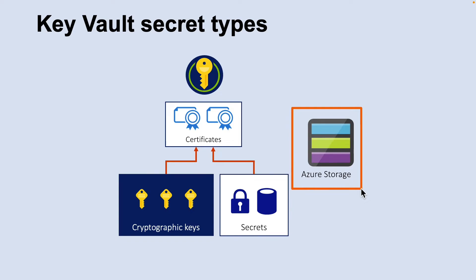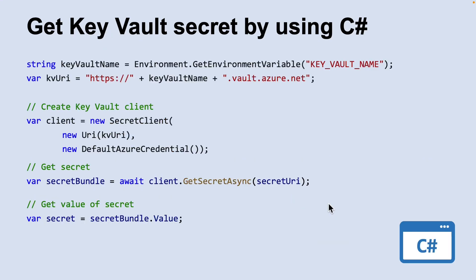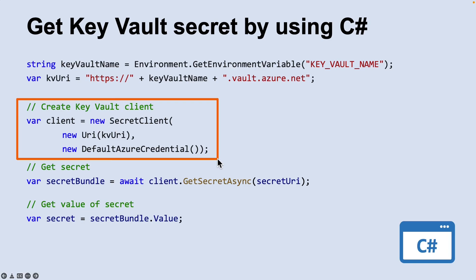This simple script demonstrates how you can create a resource group and an Azure Key Vault resource using Azure CLI. Once created, the script creates and then retrieves a secret named database password in the Key Vault resource. Key Vault provides a way to securely store credentials and other keys and secrets. However, your code needs to authenticate to Key Vault to retrieve them. You can use a security token that you generate and pass to the constructor of the Key Vault client access class. After you have a client instance, you can use the get secret async method to retrieve a secret by its unique URI, and then retrieve the value from the returned bundle.